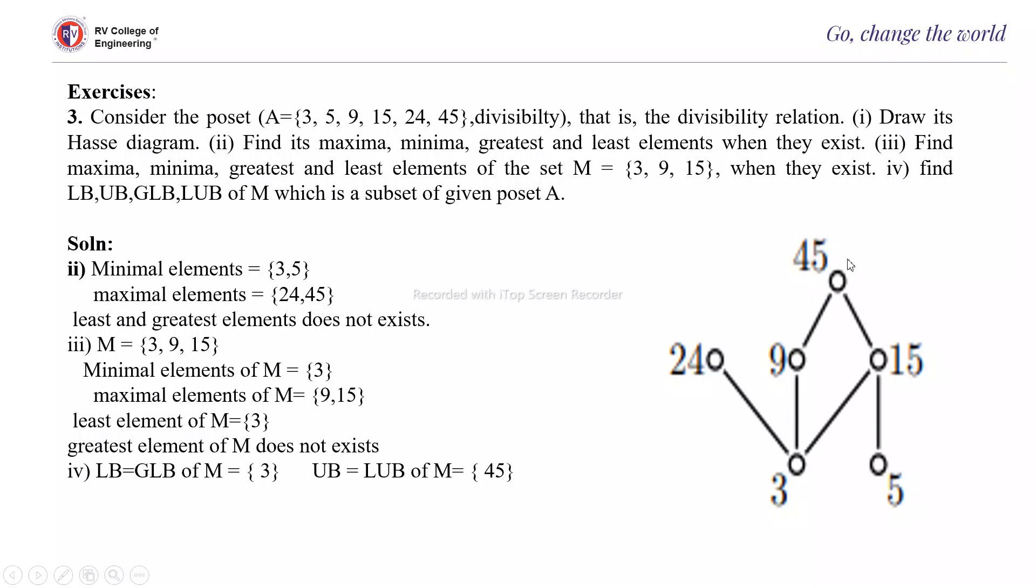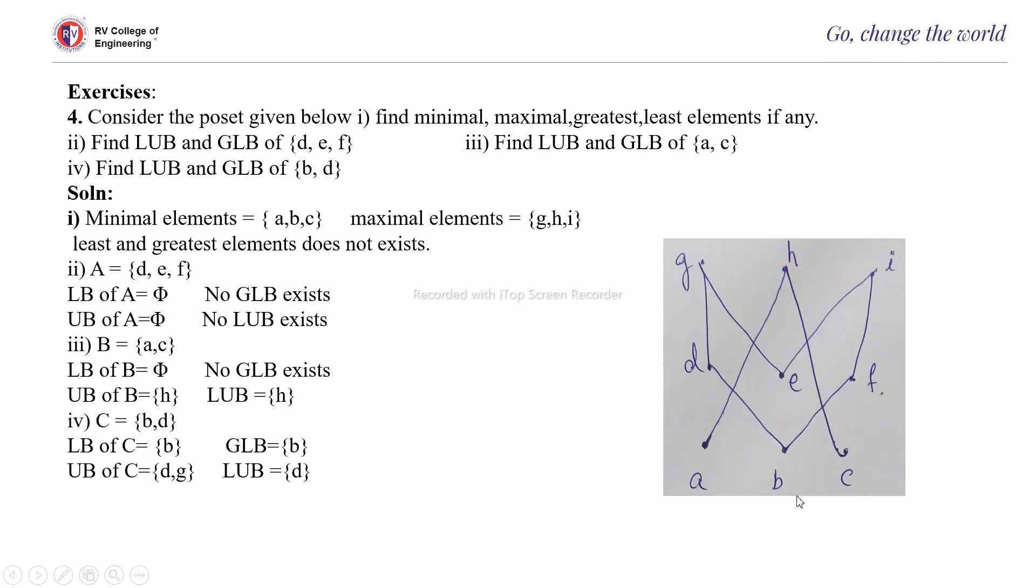3, 9, and 15. Upper bound, upper bound is 15, lower bound is 3. Upper bound is 3, 45, and lower bound is 3. So likewise again here, upper bound, lower bound for various subsets has been found for the given diagram, Hasse diagram.